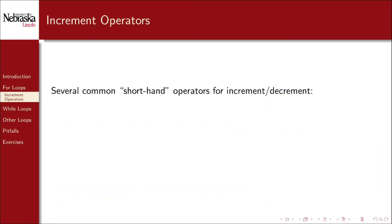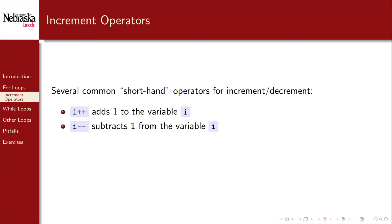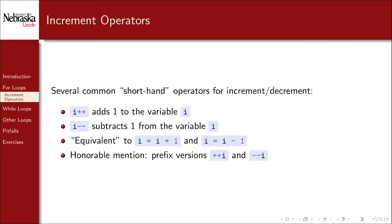There are several common shorthand operators for incrementing and decrementing values stored in variables, since these are really common tasks. i++ adds 1 to the variable i. i-- subtracts 1 from the variable i. Each of these is equivalent to adding 1 or subtracting 1 and reassigning the variable. They have the same effect but are different operators with different orders of precedence. Similar operators called prefix incrementers exist, but we'll stick with the postfix operators.